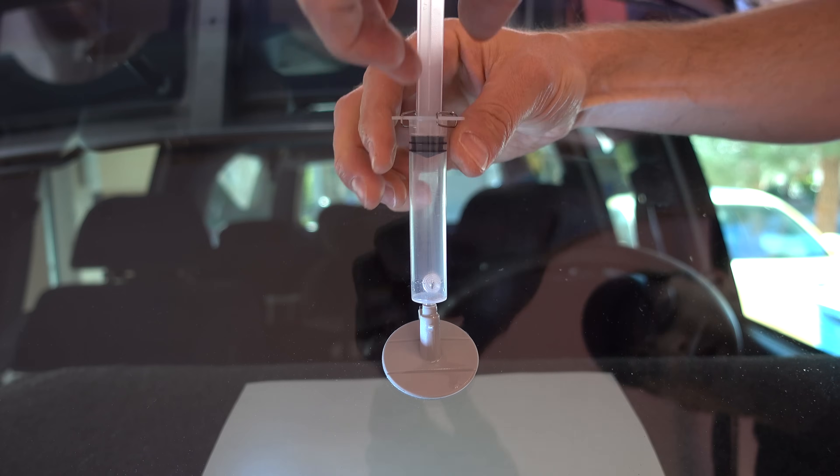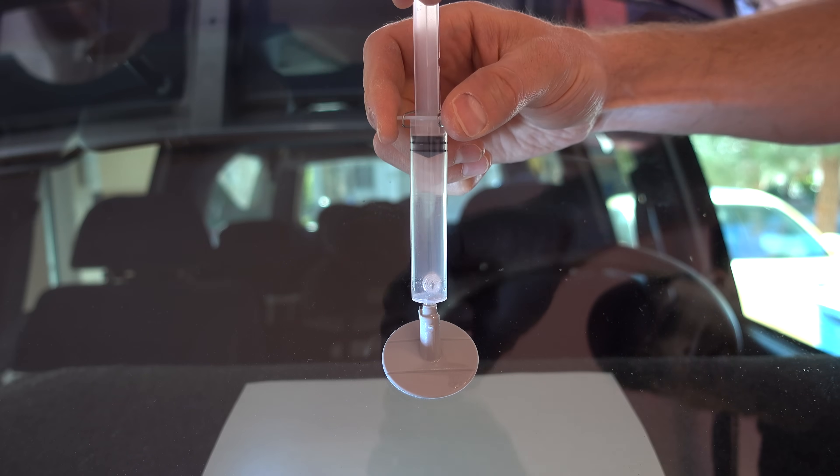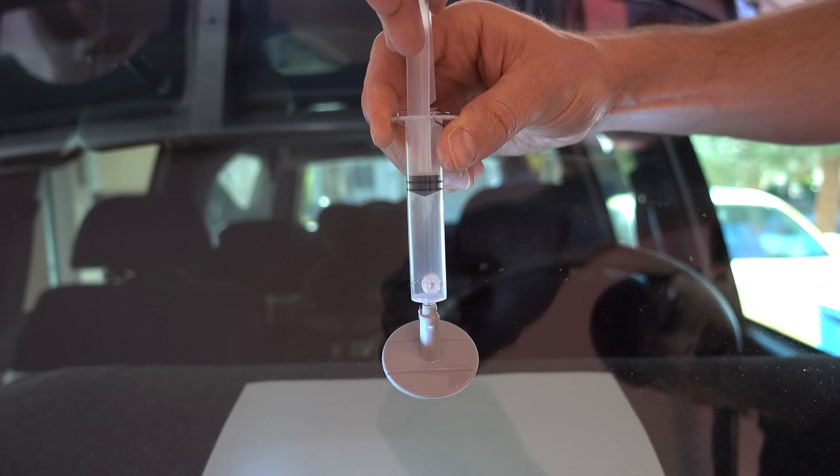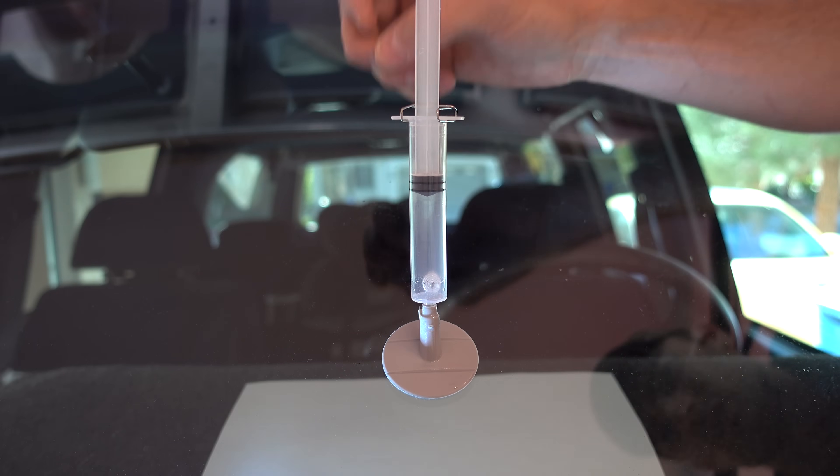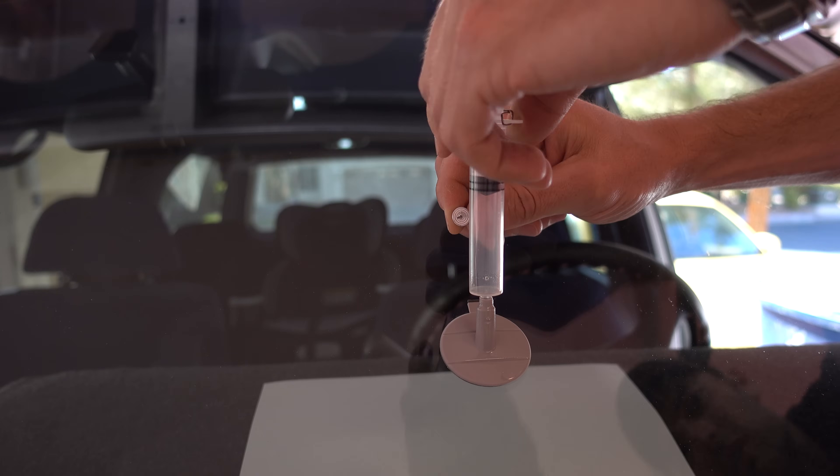Replace the pin and then press down on the plunger, creating positive pressure to force the resin into any of the tiny spaces in the crack. After 15 minutes, remove the syringe.